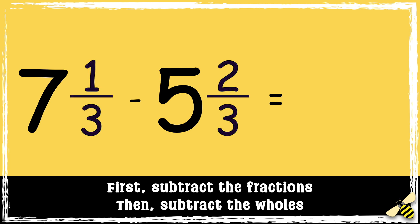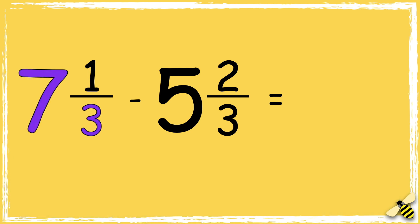There are different ways you could figure this out, but I'm going to convert the mixed numbers into improper fractions. So seven times three is twenty-one, and twenty-one add one is twenty-two.